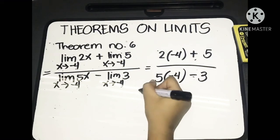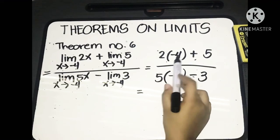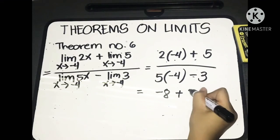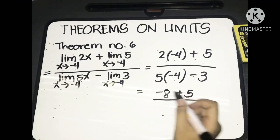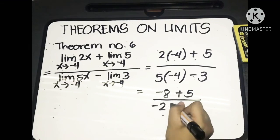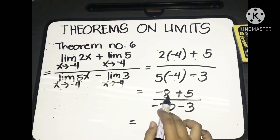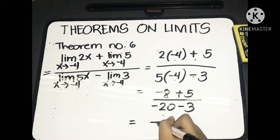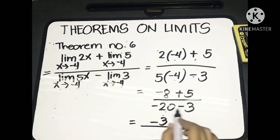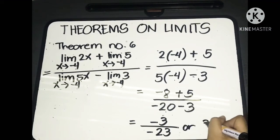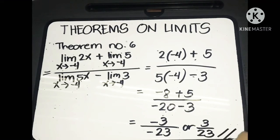Simplifying: 2 times negative 4 equals negative 8, plus 5, over 5 times negative 4 equals negative 20, minus 3. So we have negative 8 plus 5, which is negative 3, over negative 20 minus 3, which is negative 23. This can be written as 3 over 23. That is the final answer.